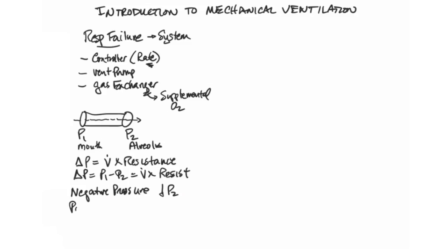And then the alternative, the one that we use most of the time clinically now, is a positive pressure ventilator in which we elevate the pressure at the mouth, the P1. And that now has generated a pressure differential that allows us to move air into the lung.